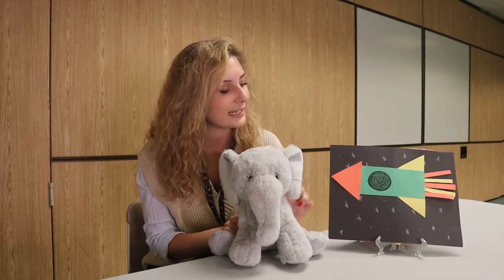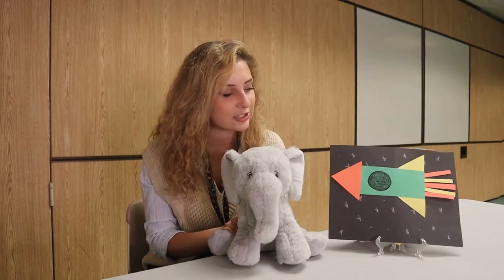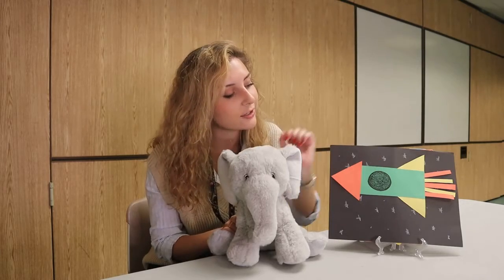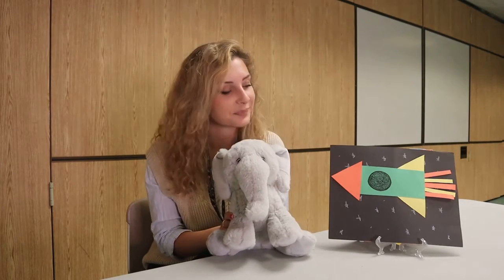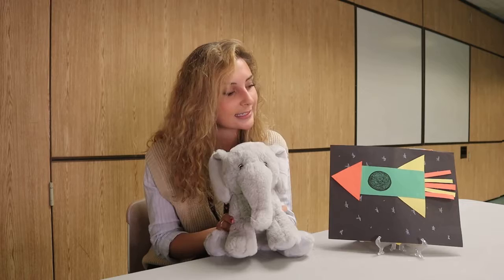For this craft you will need black construction paper, orange construction paper, yellow construction paper, construction paper of whatever color you want your spaceship to be. You will need markers and crayons, scissors, a glue stick, and a popsicle stick.